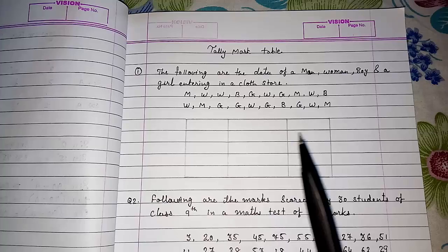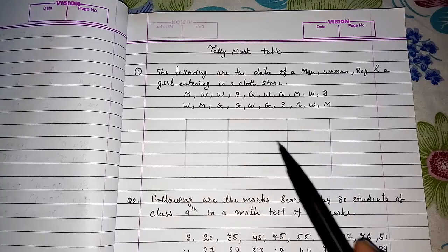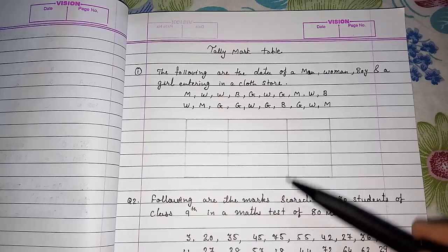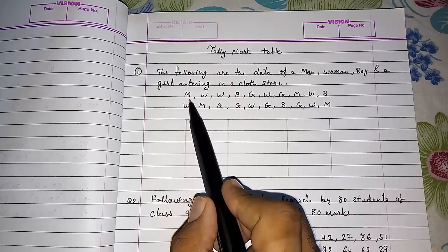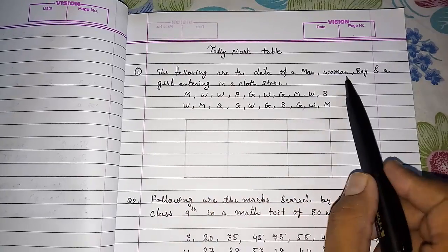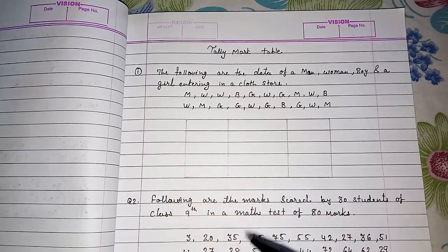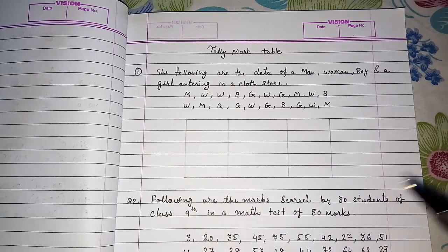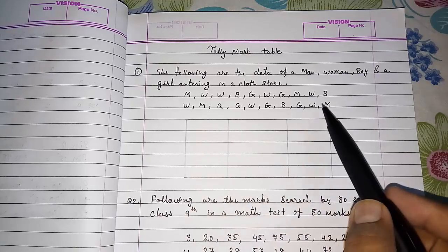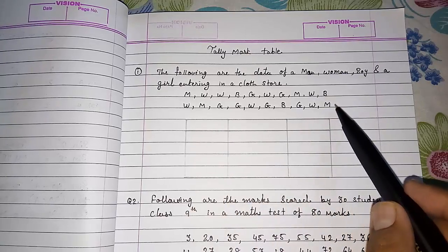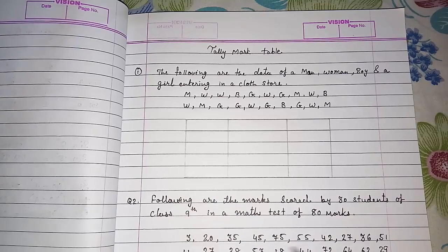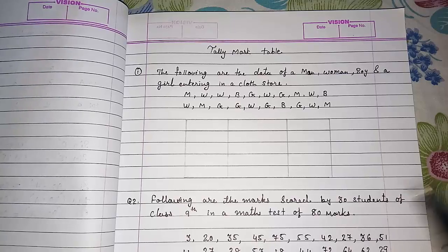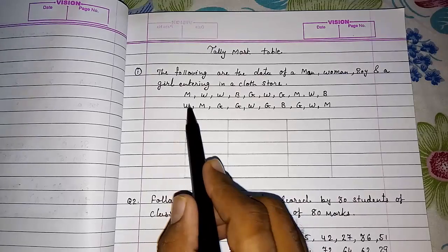For arranging this data systematically we are doing tally mark table. I am going to solve two sums. In both sums you will get different things to study. Here the data are single entries: man, woman, boy and girl. But when you get hundreds of numbers, you have to use another method. So first we are doing this simple one and then I am going to use that second method.